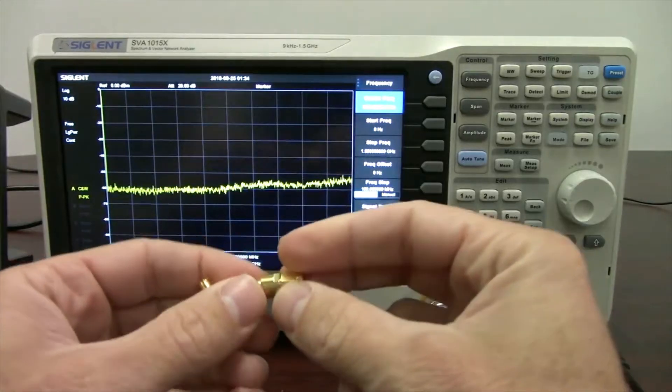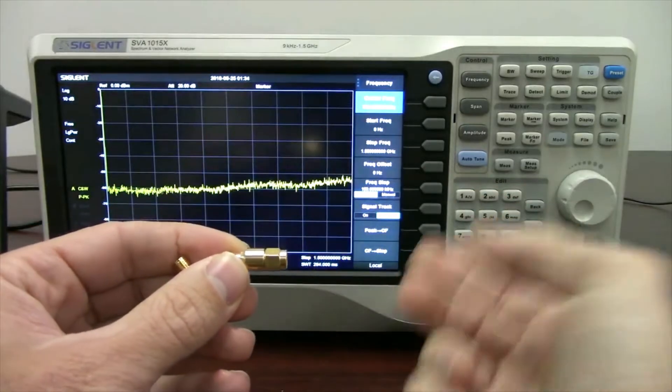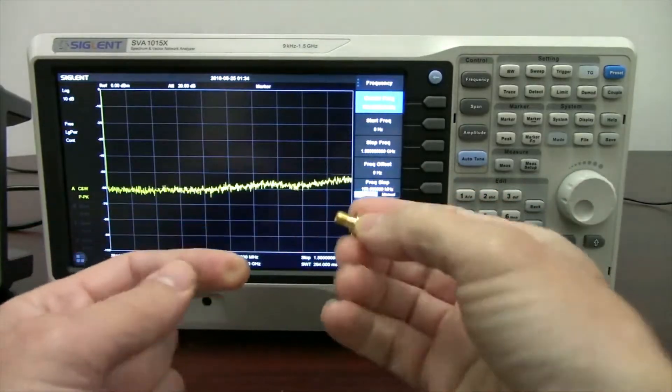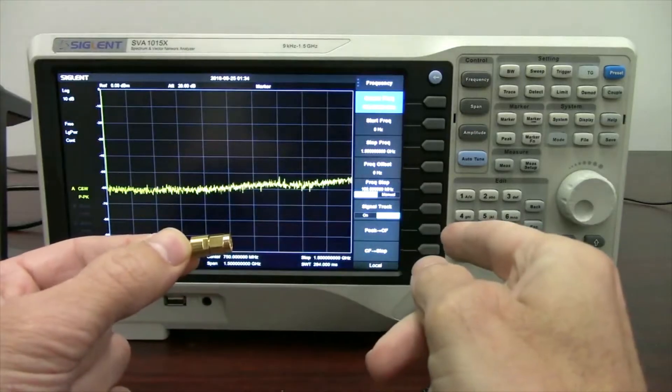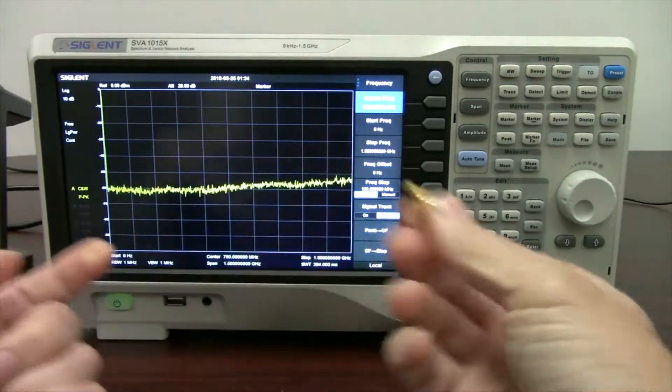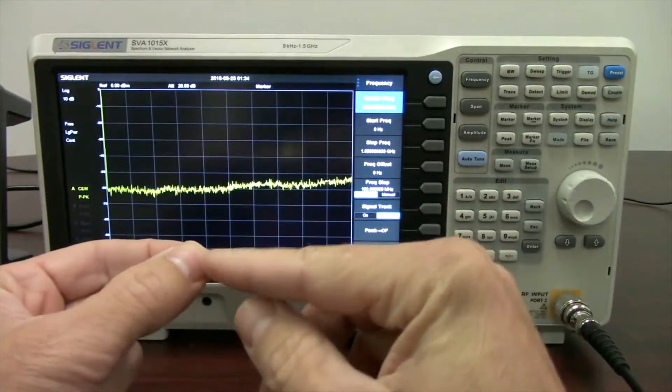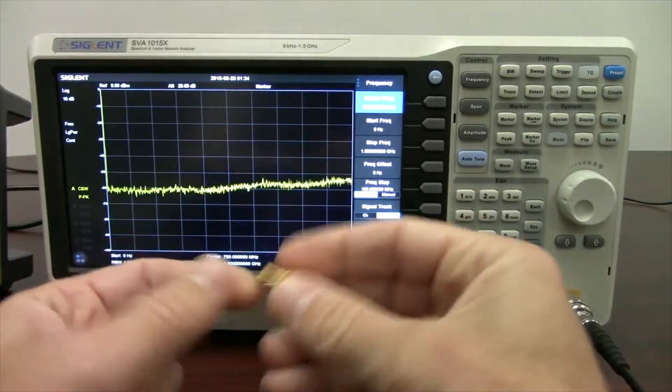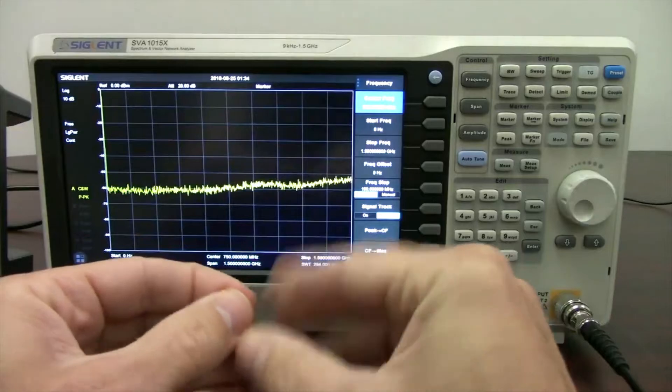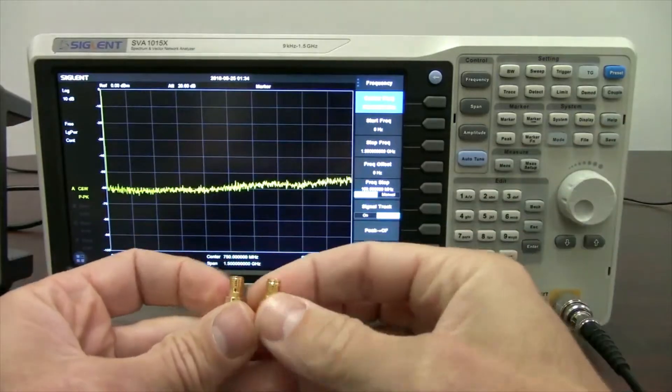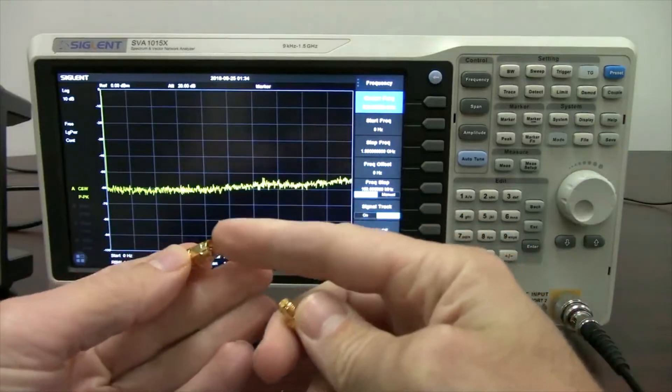For those of you that may not be aware, an attenuator is an element that will decrease the signal coming out. So if we have 0 dBm coming in, we're going to have minus 10 dB coming out if it's a 10 dB attenuator, or if it's 0 dBm in and we've got a 20 dB attenuator, we'll get minus 20 dB out. So it helps to knock the signal down or decrease the amplitude of the signal going into the next element of the circuit. These are 50 ohm and they terminate with SMAs on either end, SMA female and SMA male.